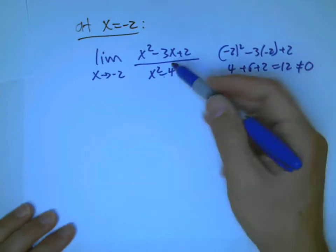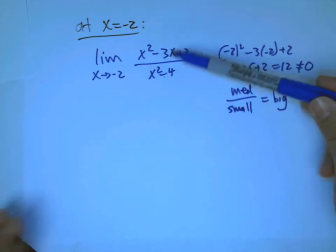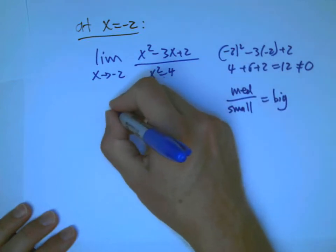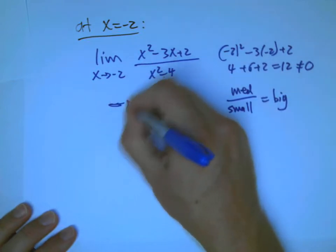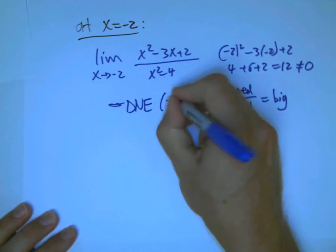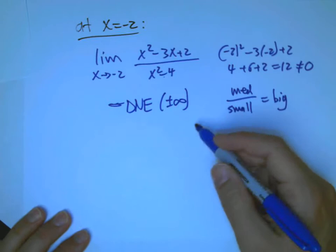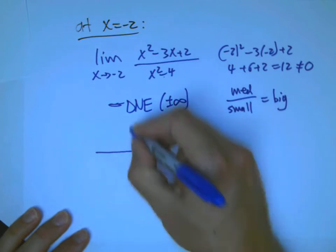Medium over very small is big. That's not technical language, but the way to say it is, this fact that we know that if the top's not going to 0 and the bottom is, then this is DNE. And if we did more work, we'd find out whether it's plus or minus infinity or exactly what kind of asymptote it looks like.